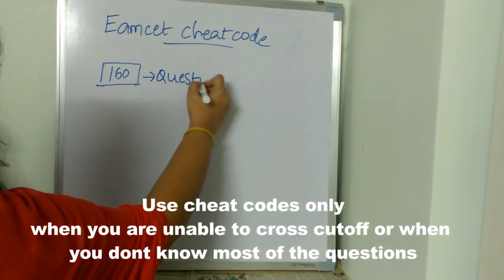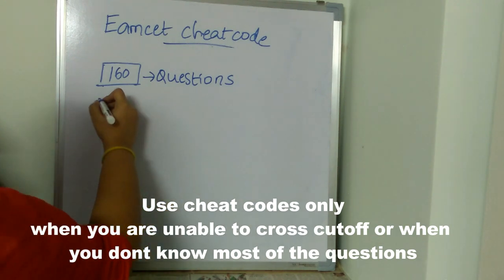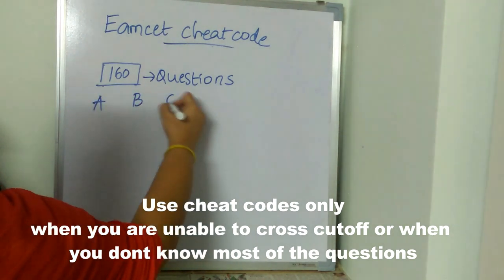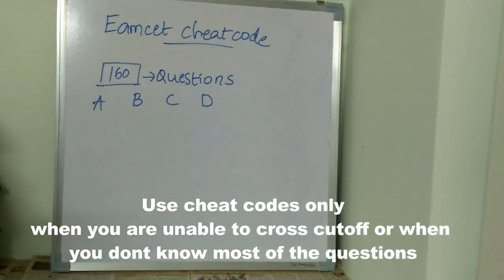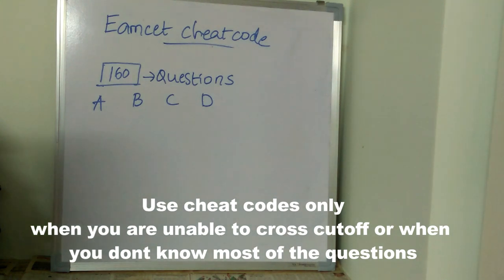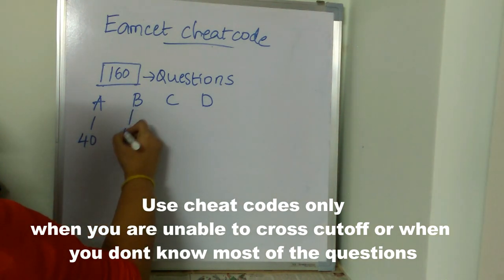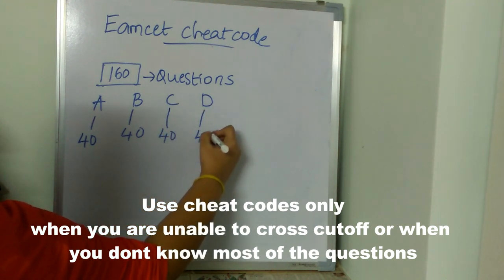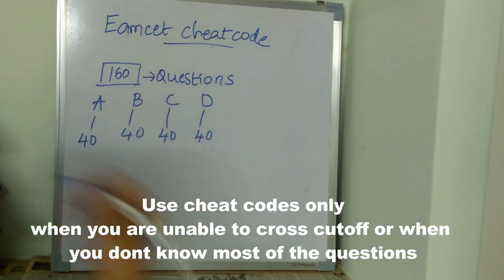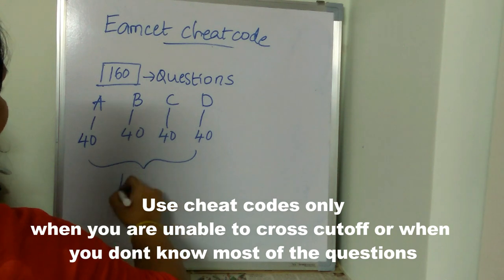All 160 questions are going to be in the exam, and we also know there will be 4 options. So all 4 options will be repeating 40 times in the question paper. Option A will repeat 40 times, Option B will appear 40 times, Option C will appear 40 times, and Option D will be the answer for 40 questions. Altogether, 160 questions.